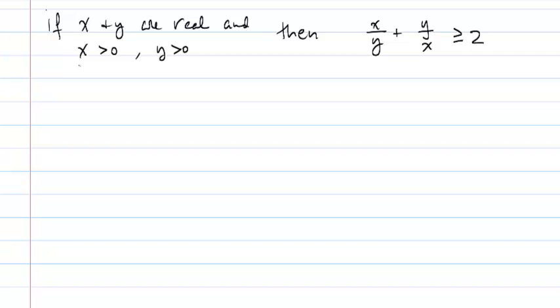So the theorem we're trying to prove is that if x and y are real numbers, and x and y are both greater than 0, then the ratio of x to y plus the ratio of y to x is greater than or equal to 2.